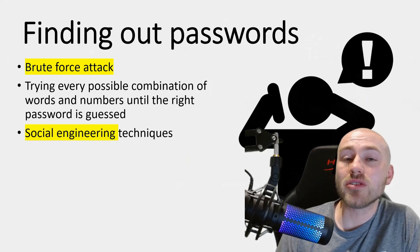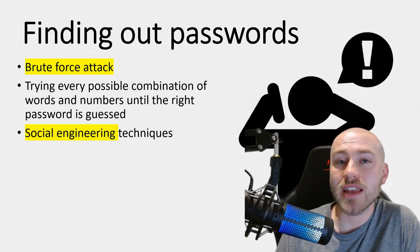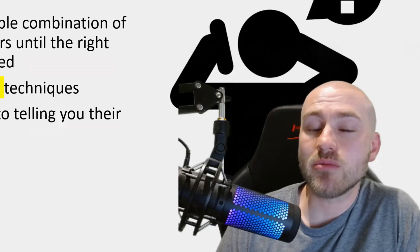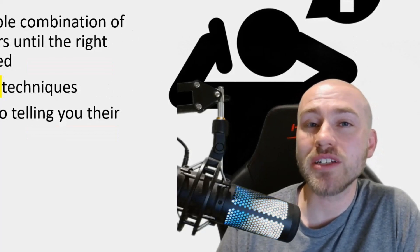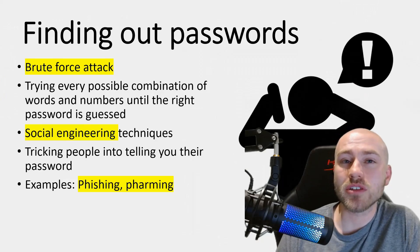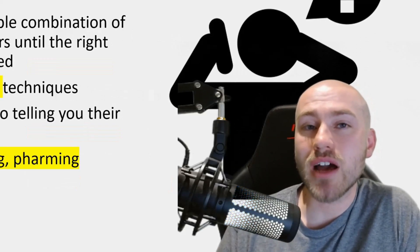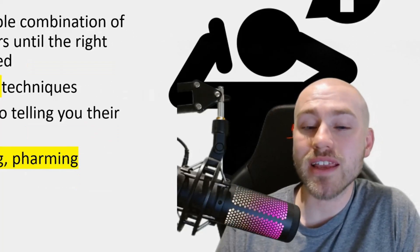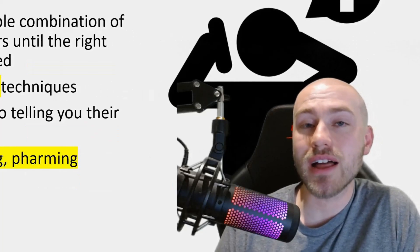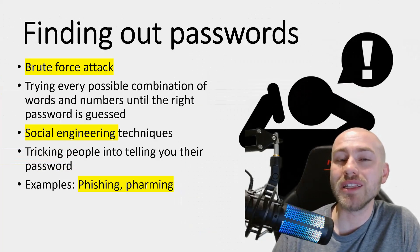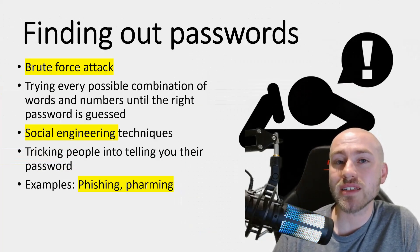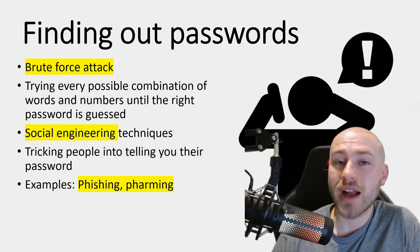Another method is social engineering — tricking someone into giving away their confidential information. A common example is phishing, where someone opens a malicious email containing a link. When they click it, they're taken to a very believable website where they enter their details, which are then sent back to the attacker.